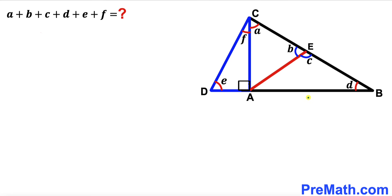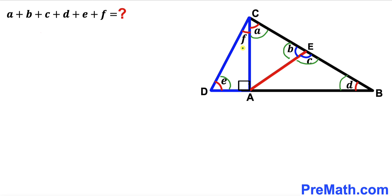Welcome to PreMath. In this video we have got two right triangles: right triangle ABC and right triangle ADC, put together as shown in the diagram, along with segment AE. As a result we get angles A, B, C, D, E, and F. Our task is to calculate the sum of all these angles — in other words, angle A plus angle B plus angle C plus angle D plus angle E plus angle F must be equal to how much?